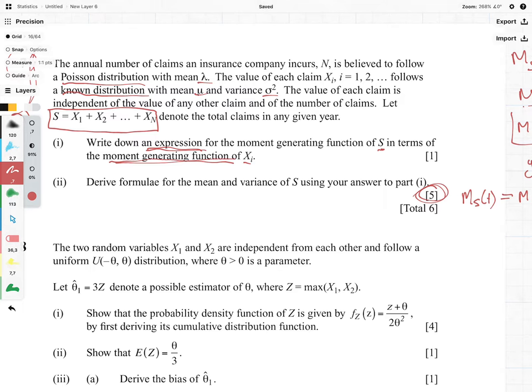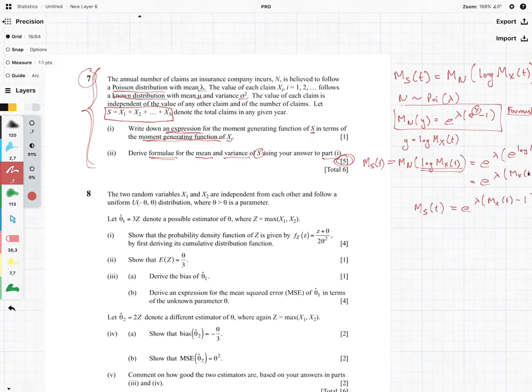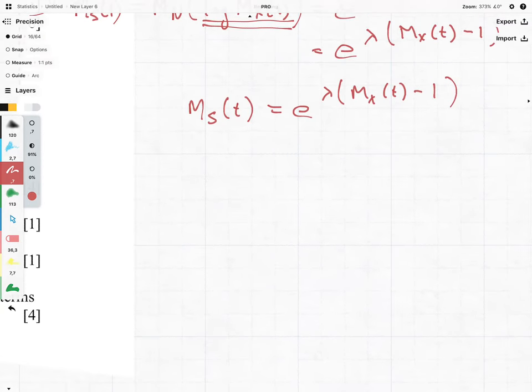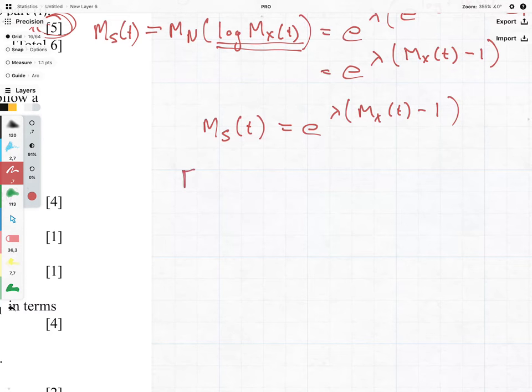What we need to now do is derive the formulae for the mean and the variance of S using your answer to part one. So we need to find the mean and the variance. And we know the following.